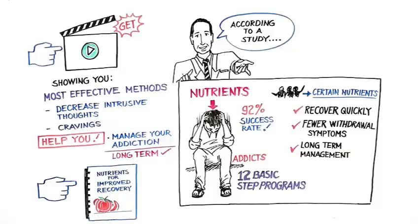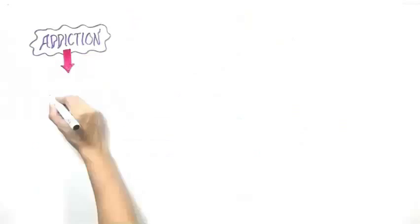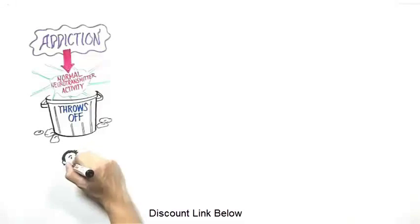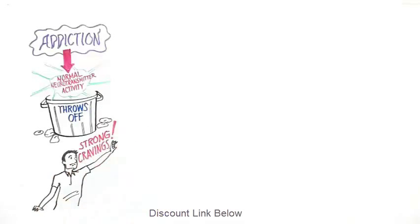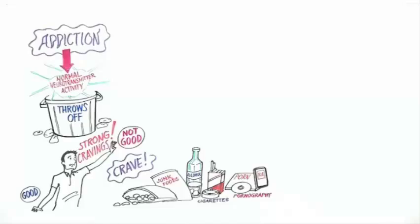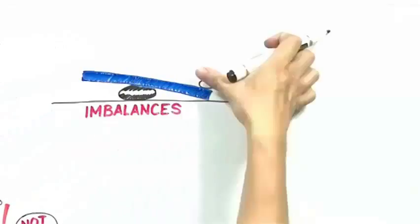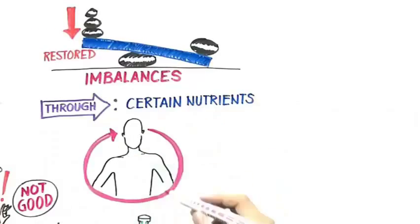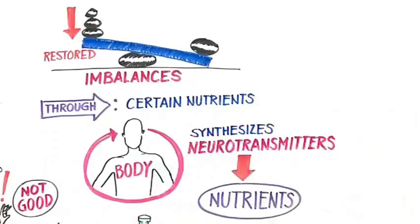The reason that using certain nutrients was so successful is because it can restore the biochemical imbalances in the body that are caused by addiction. No matter what the addiction is. Because all addiction problems are largely the same. They are all chemically based in the brain. You see, addiction throws off normal neurotransmitter activity. This is why we have strong cravings for things that aren't necessarily good for us. We crave junk food or a boost of dopamine through alcohol, cigarettes, or pornography.